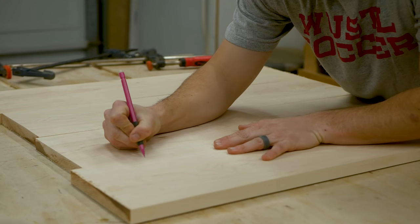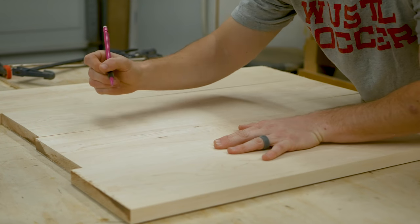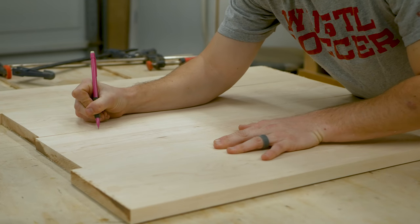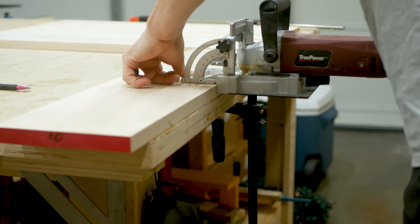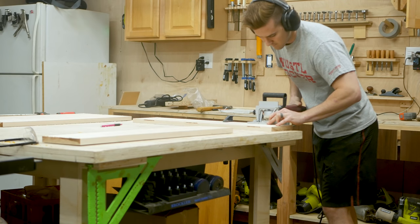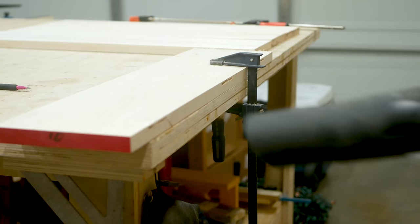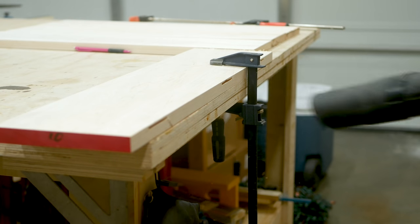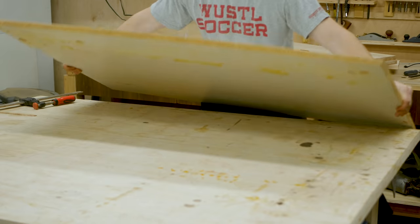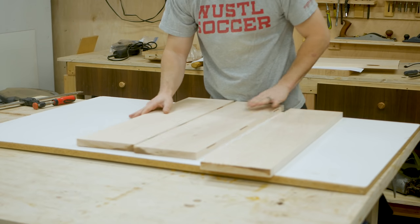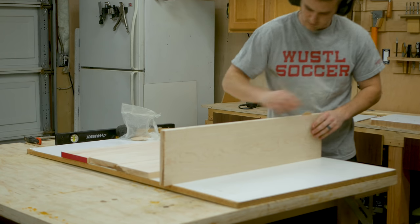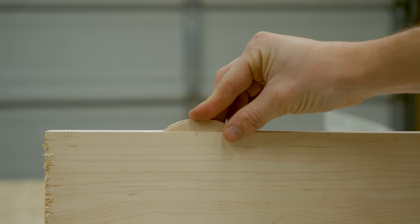To keep things aligned during the glue up I borrowed a friend's biscuit joiner. Without a drum sander or an extra wide planer I really wanted to make this thing as flat as possible so clean up would be easy and so that when I went to hand route things later my surface would be flat. Biscuits don't add much in strength but having used this for the first time I can say that they go a very long way to keep things lined up in your glue ups.